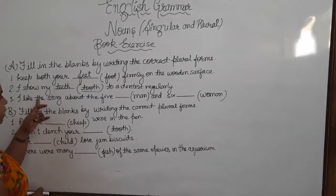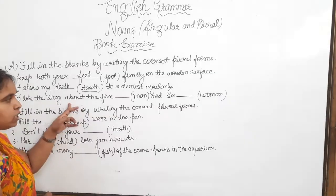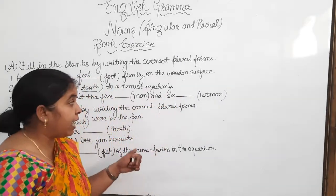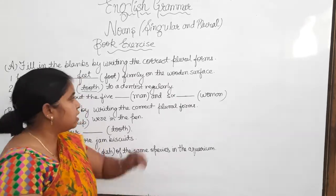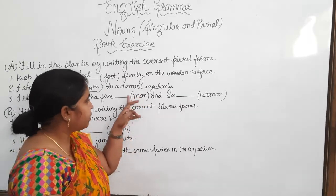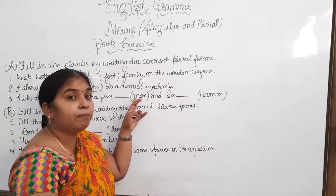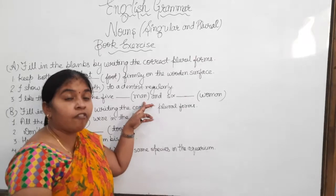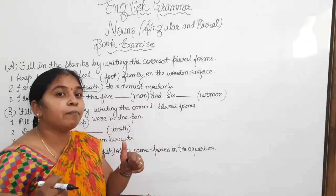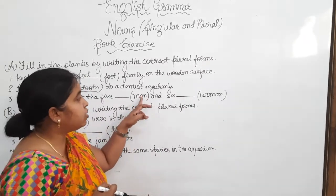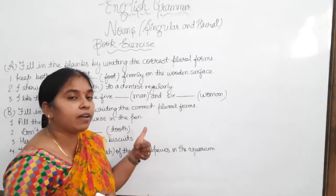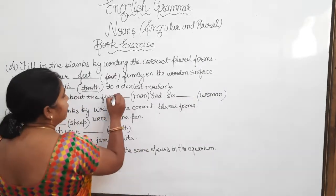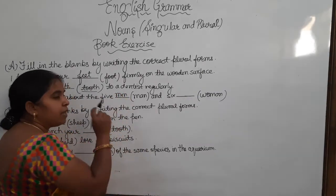Next: 'I like the story about the five dash and six dash.' In this sentence there are two blanks. For the first blank, the word in the bracket is 'man' — M-A-N. The plural of man is 'men' — M-E-N. We only change the vowel: the A becomes E in the plural noun. So 'men' will come in the blank. Don't write M-A-N-S.